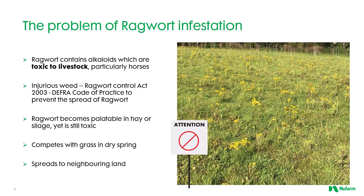Let's start by looking at the problems caused by ragwort infestation. Ragwort is essentially a poisonous plant if eaten by livestock. It contains alkaloids — chemicals which can build up in the liver and are toxic. Horses are particularly susceptible. Due to this fact it's now classed as an injurious weed and has even got its own act of parliament in the UK from 2003.